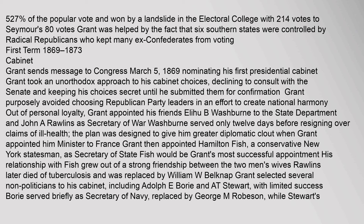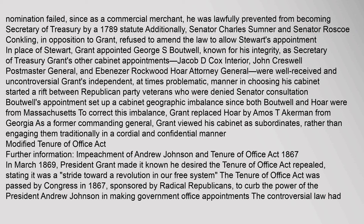Nominating his first Presidential Cabinet, Grant took an unorthodox approach, declining to consult with the Senate and keeping his choices secret until he submitted them for confirmation. Grant purposely avoided choosing Republican Party leaders in an effort to create national harmony out of personal loyalty. Grant appointed his friends Elihu B. Washburn to the State Department and John A. Rollins as Secretary of War. Washburn served only 12 days before resigning, the plan designed to give him greater diplomatic clout when Grant appointed him Minister to France.